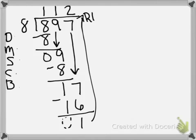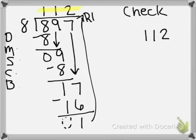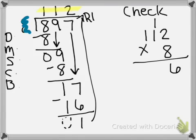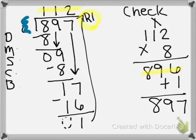Now we're at the check part. How do we check our division problem, that we did it correctly? The first thing you're going to do is take your quotient — your answer — and write that. Then you're going to take your divisor 8 and multiply it. So I get 8 times 2 is 16. And we'll use the regrouping method: 8 times 1 is 8, plus 1 is 9. 8 times 1 is 8. I get 896. But we have to incorporate our remainder, so we're going to add the remainder because it was left out. And we should get 897. Our answers should match each other — it should be exactly perfect.